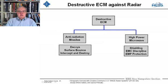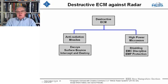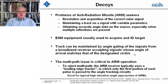Destructive ECM techniques against radar are really two: anti-radiation missiles, which intercept and destroy the target, and high-power microwave — if you emit very high-power microwave on the radar, you can counter that by shielding and EMP protection.